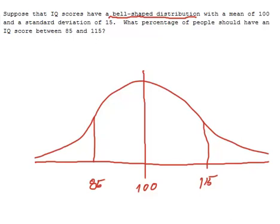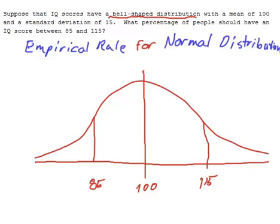Now what I would like to use to solve this problem is the empirical rule for normal distributions, which can be summed up with three numbers: 68, 95, 99.7.